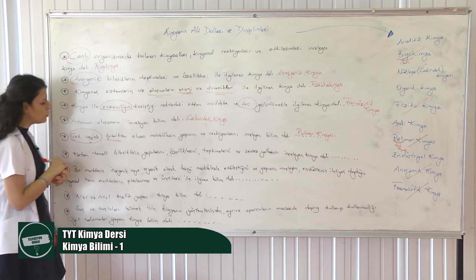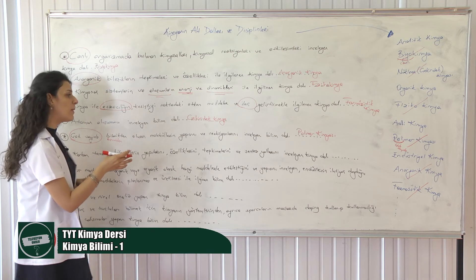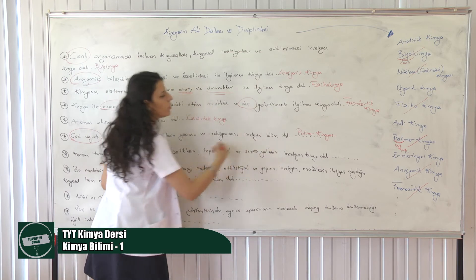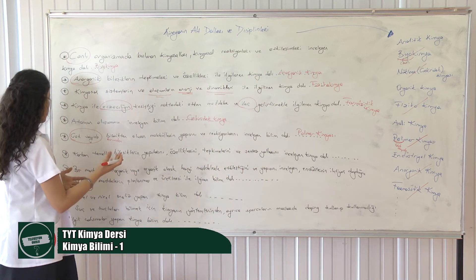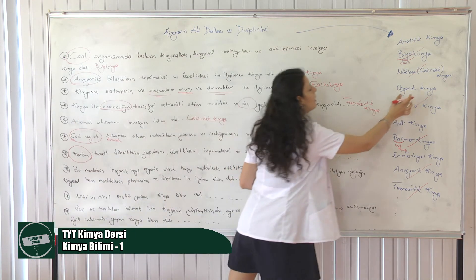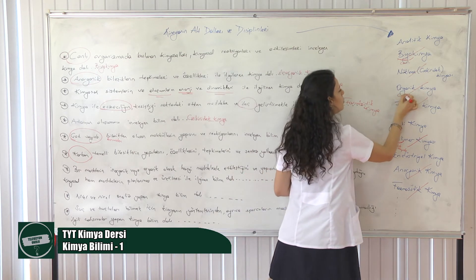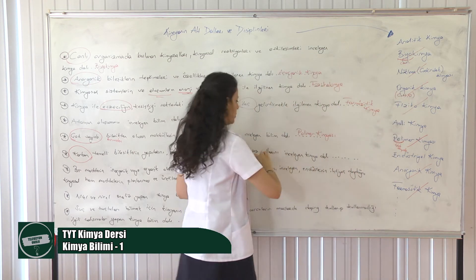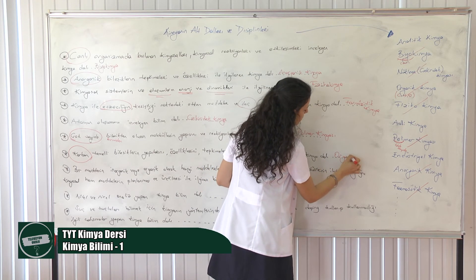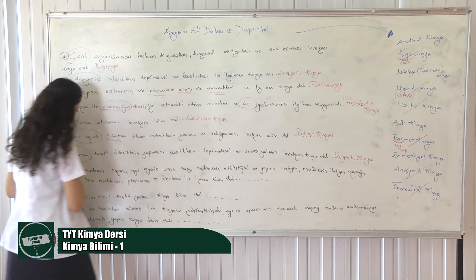Karbon temelli bileşiklerin yapılarını, özelliklerini, tepkimelerini ve sentez yollarını inceleyen kimya dalı. Buradaki esas kelime karbon temelli olması. Organik kimya karbon temelli bir kimyadır; içinde karbon, hidrojen, oksijen ağırlıklı olan bir kimya dalıdır. O yüzden deriz ki karbon temelli dediği için bu kimya dalımız organik kimyadır.